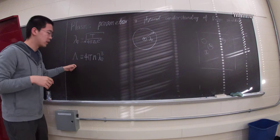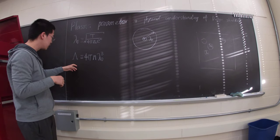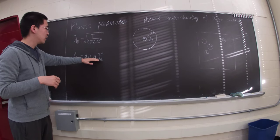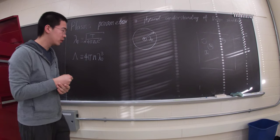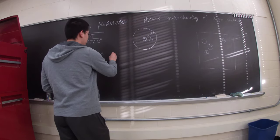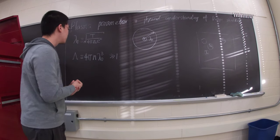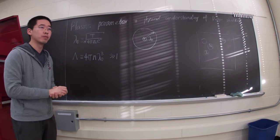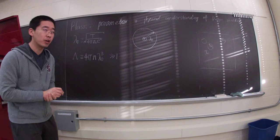So here is the plasma parameter: 4πn times λ_D cubed, and it's required to be much greater than 1 to let a lot of plasma approximations work.